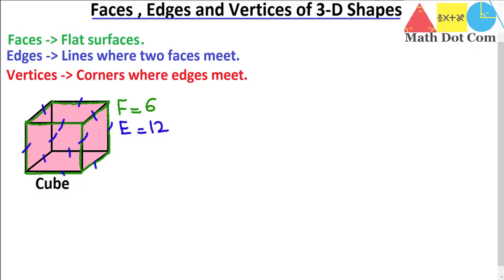Then we have the vertices. Vertices are the corners where the edges meet. Let's point out the corners: one, two, three, four, five, six, seven, eight. A cube has eight vertices. So this is how you can identify faces, edges, and vertices in all three-dimensional shapes.